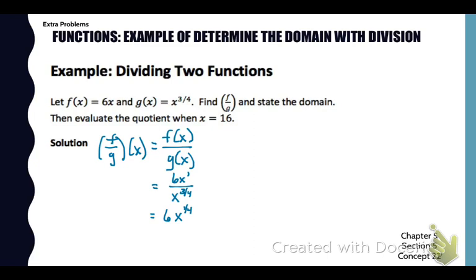So six x divided by x to the three-fourths power. If we simplify those exponents we can subtract, one minus three-fourths is one-fourth. So our new function is six times x to the one-fourth. Now I need to state a domain rule.